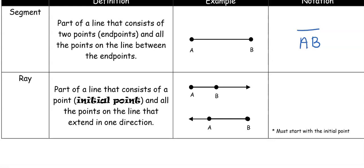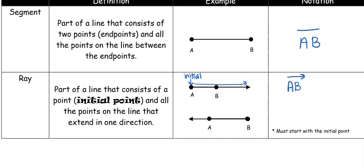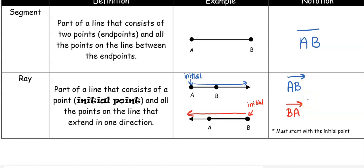A ray is part of a line that consists of an initial point and all the points that extend in only one direction — a line extends in both directions. Starting at A, this is the initial point; it extends towards B, so B comes second, and the notation above is an arrow going to the right. The arrow always points to the right. For a ray going the other direction, the initial point is the endpoint — not where the arrow points — so we start with B and go towards A, and we still draw the arrow to the right.